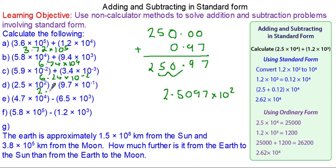When the number is bigger than 1, it is a positive power. When it's less than 1, it is a negative power.